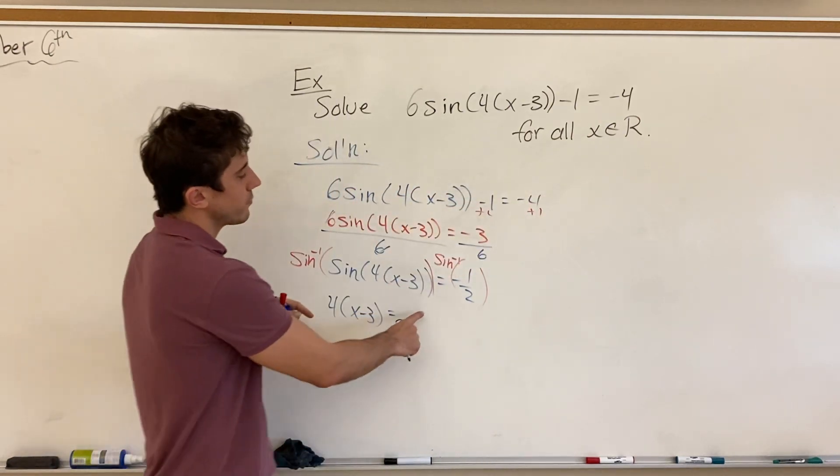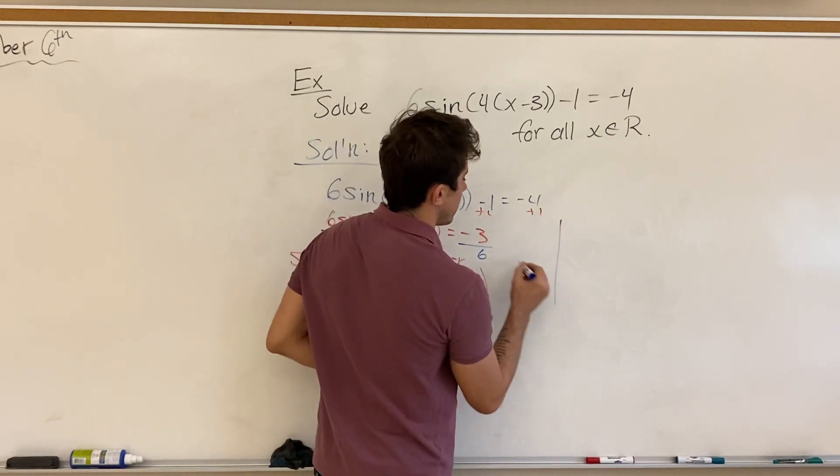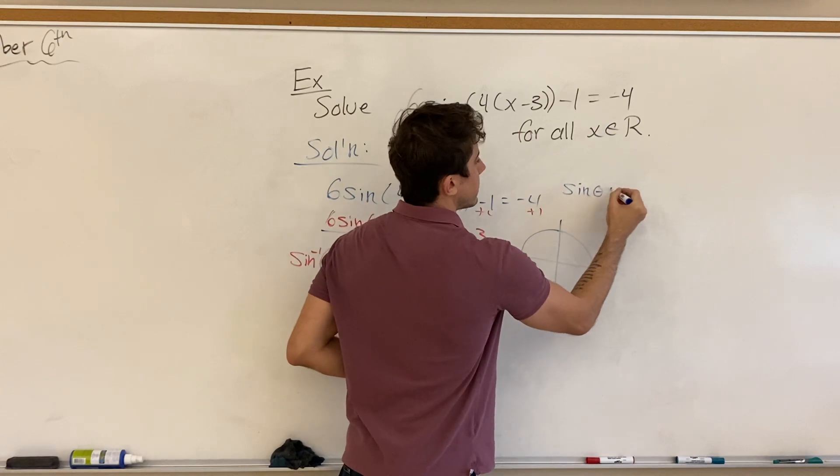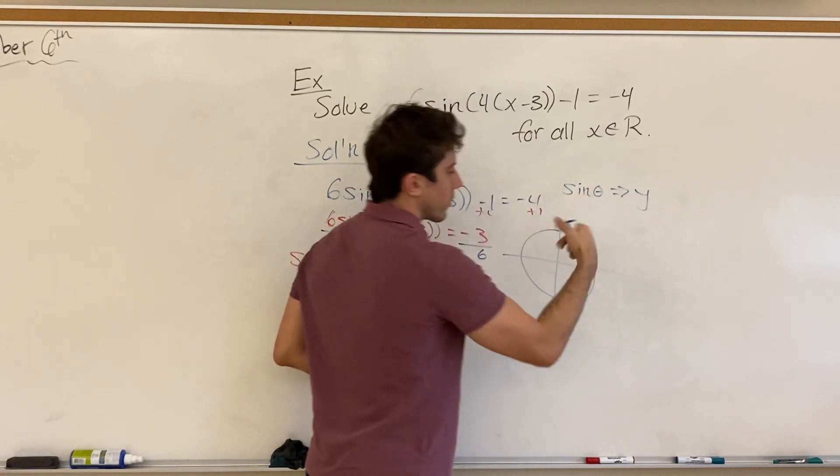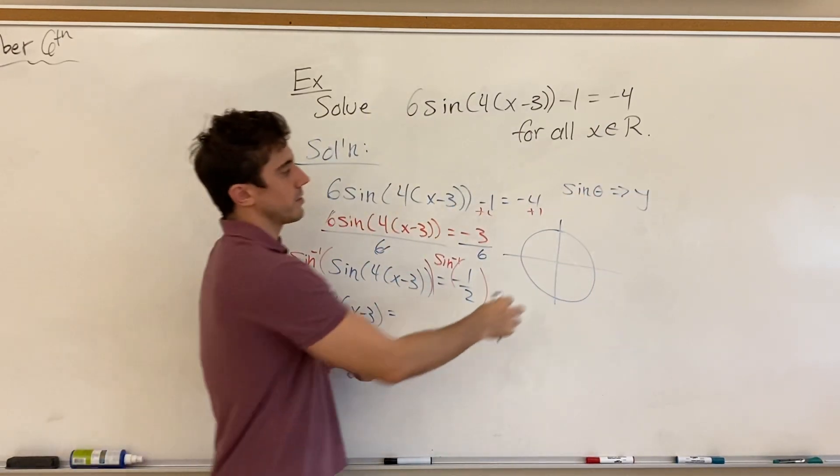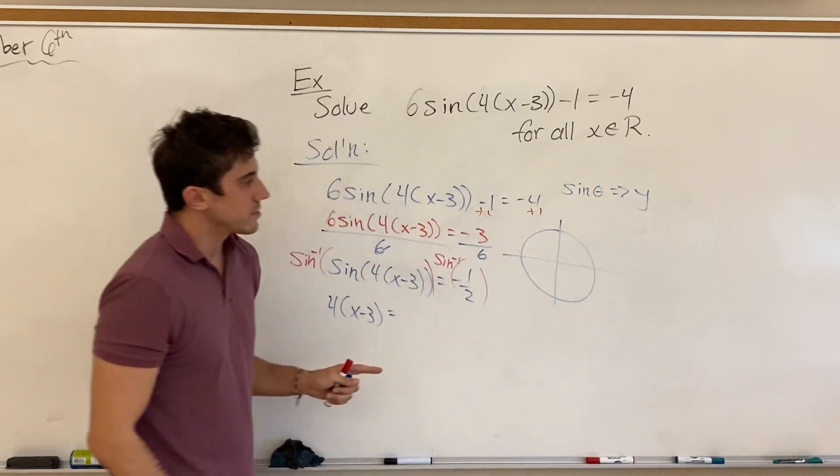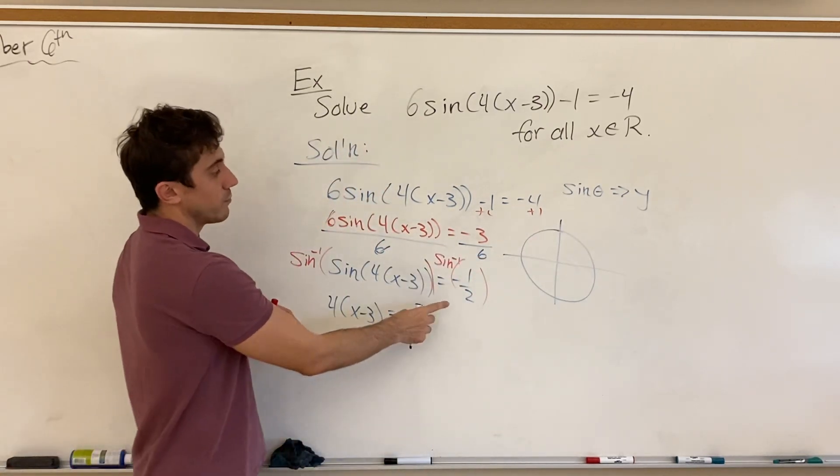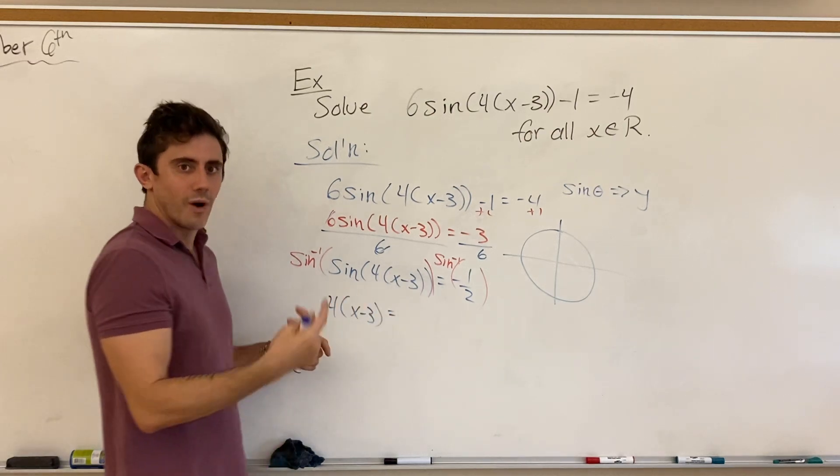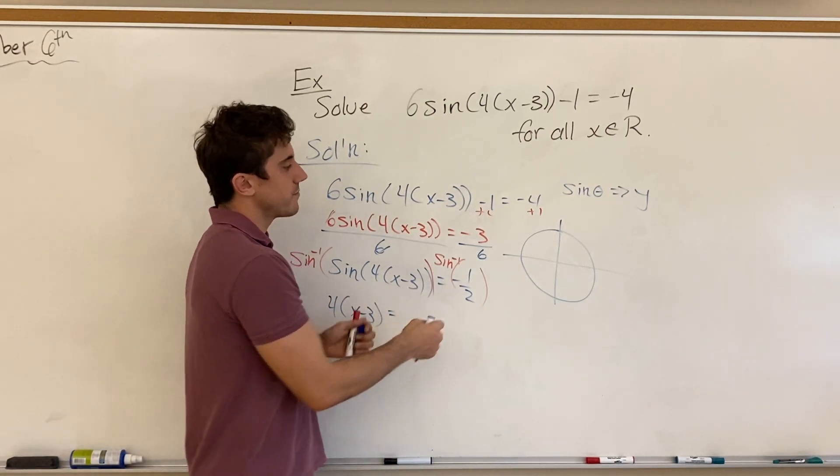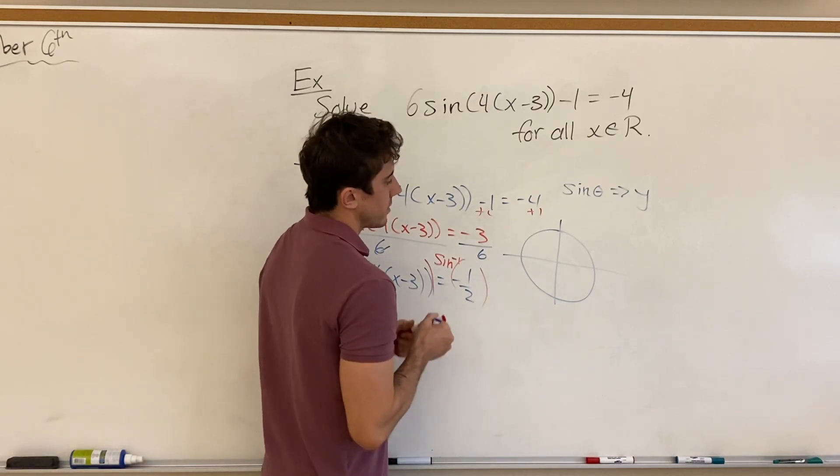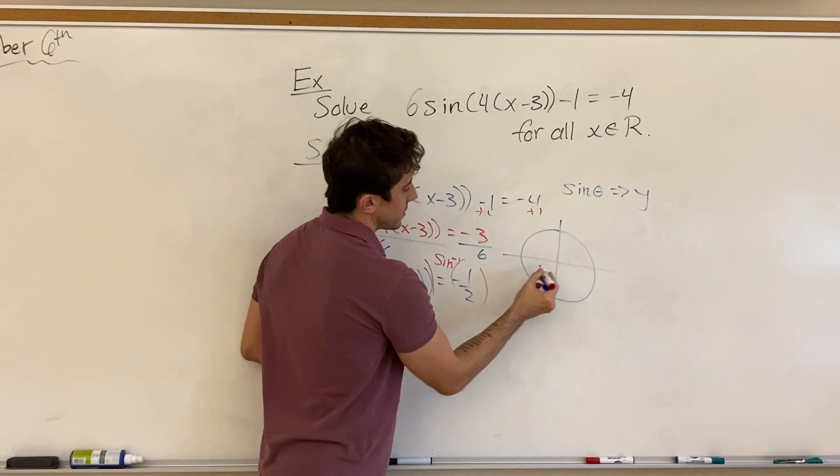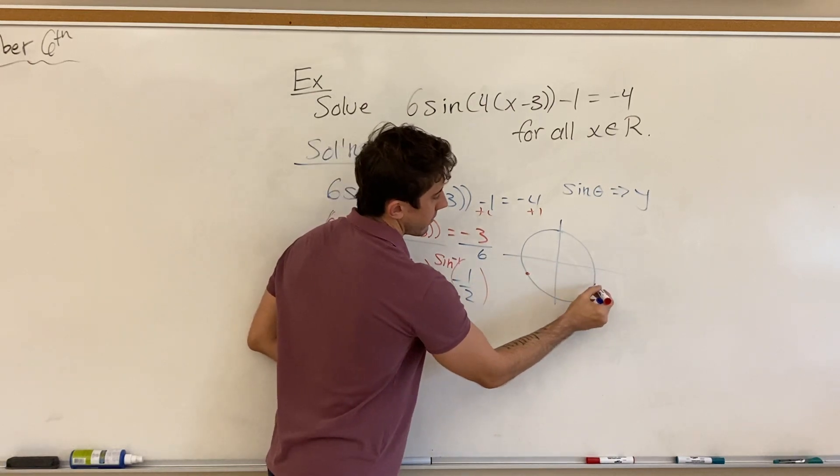So if we look at our unit circle, sine theta is connected to our y coordinate. When we look at the coordinates of any point on our unit circle, and so our sine theta being y, and us wanting the inverse sine of negative 1 half means that we're going to look for the points where sine theta being y coordinate is negative, which is going to be around here and around here.